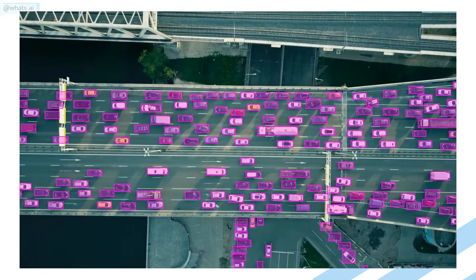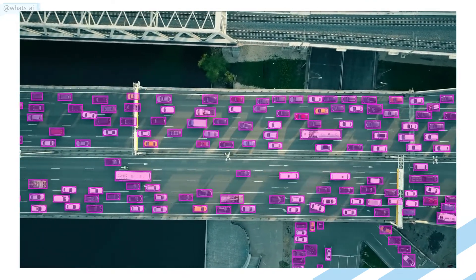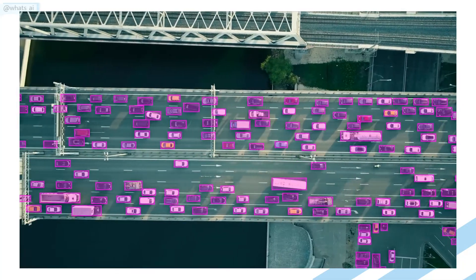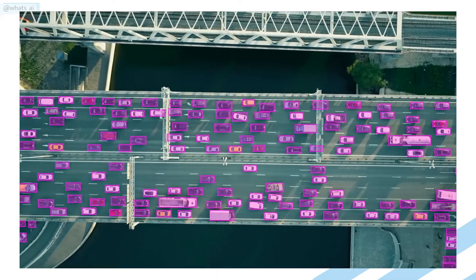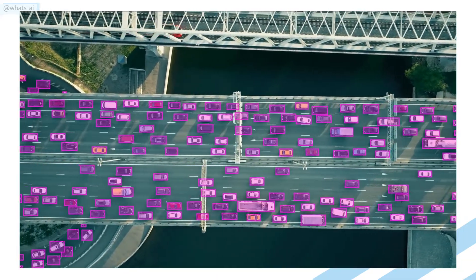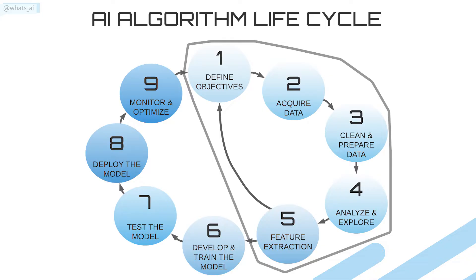One of the most time-consuming steps in the life cycle of an artificial intelligence algorithm is gathering data and preparing it. A deep learning model will perform poorly without a proper dataset — meaning data that is appropriate to our task and annotated. Data annotation, also frequently referred to as data labeling, is for sure the hardest and longest step that will make your application fail or succeed.